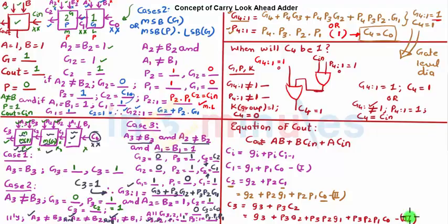Again, if you see, C3 just depends on C0, it does not depend on intermediate carries, which was the problem with ripple carry adder. So we can just predict our final carry just by looking at C0. This is the fun.